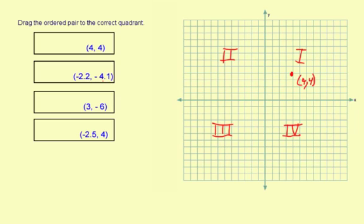The next coordinate, negative 2.2 and then negative 4.1. Negative 2.2 means negative 2.2 to the left, so about right there. And then negative 4.1 means 4.1 down. So 1, 2, 3, 4.1. I'm just going to estimate. And that's negative 2.2, negative 4.1.